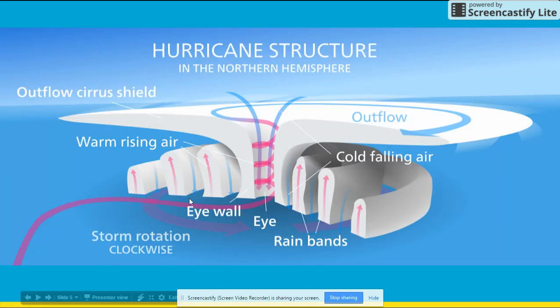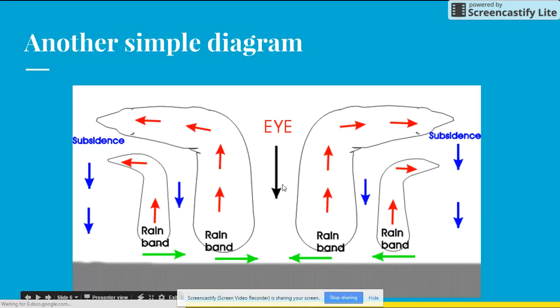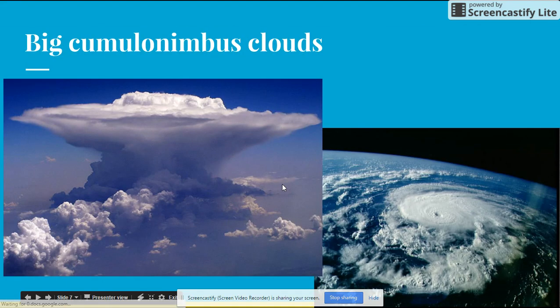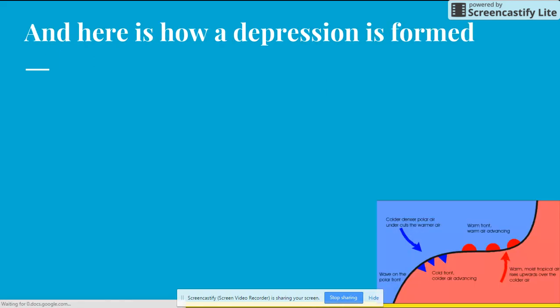As you can see in the diagram, there is high and low pressure, air rising and falling, and the eye wall. You get these big cumulonimbus clouds where you get the rapidly rising air.